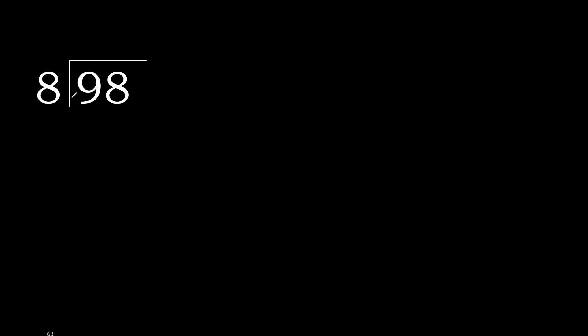98 divided by 8. 9 is not less, therefore work with 9. 8 multiplied by which number is nearest to 9 but not greater? 8 multiplied by 1 is 8, which is not greater. 9 minus 8 is 1.